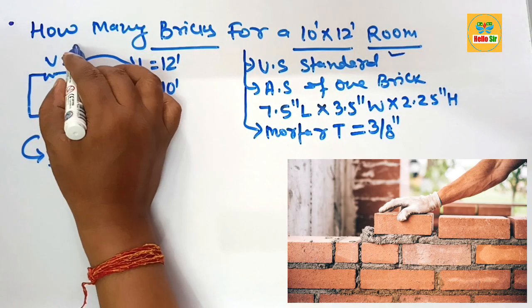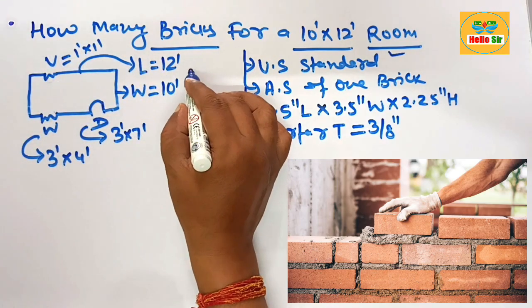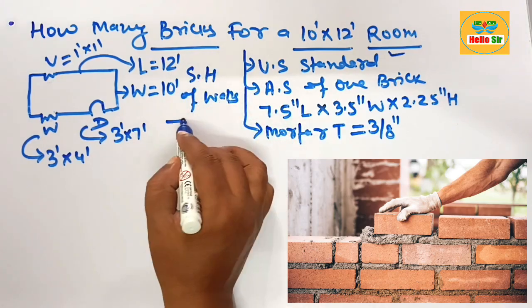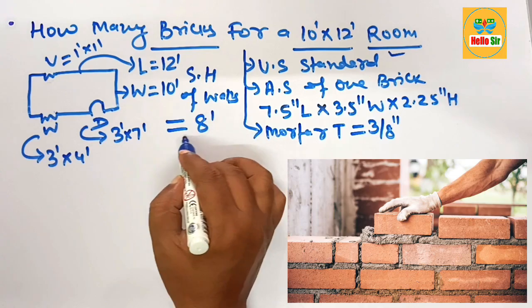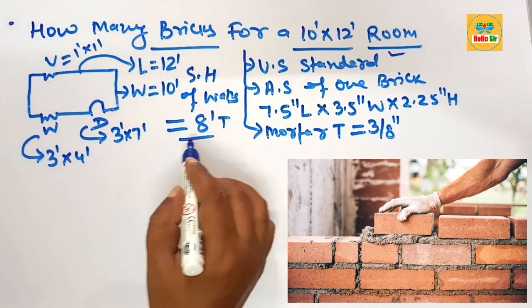The vent size is 1 foot by 1 foot. The standard height of walls in the United States is about 8 feet tall.